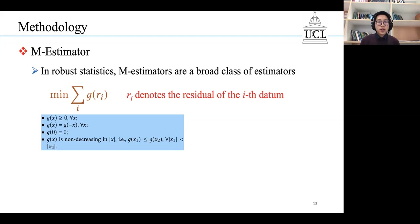r_i denotes the residual of the i-th datum, and the function g measures the contribution of each datum to the loss function.